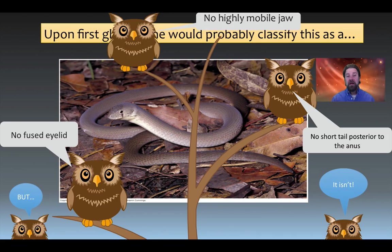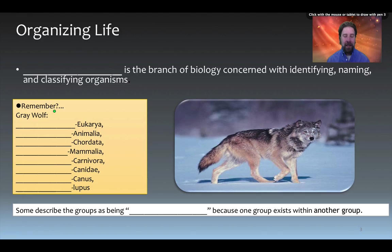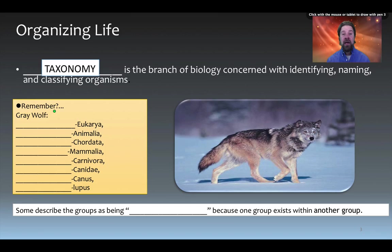We are interested in organizing life correctly — we don't want to make mistakes based on appearance alone. The branch of biology concerned with identifying, naming, and classifying organisms is of course taxonomy. Chances are you covered this early in your biology class, but let's go through it one more time.